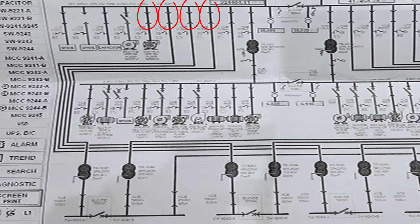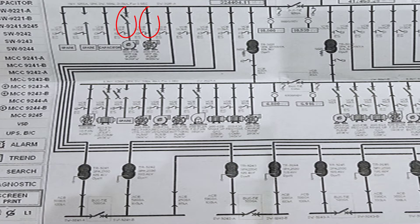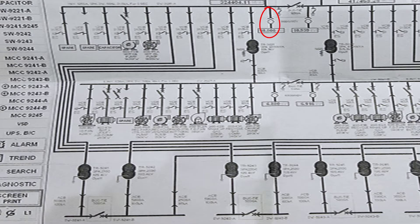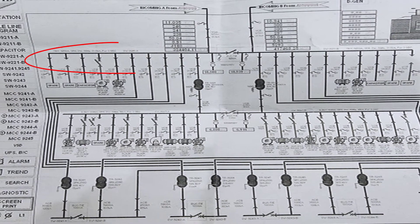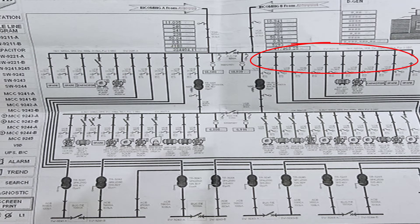The second, third, fourth, and fifth circuit breakers provide power to four 11 kV to 0.4 kV transformers. Circuit breakers six and seven provide power to two medium voltage motors. The last circuit breaker in service is connected to a capacitor bank to correct the power factor of section A. We also have a cell with a voltage transformer to measure voltage on this bus bar and send the value to all protection devices.